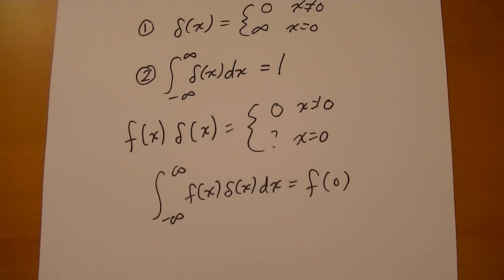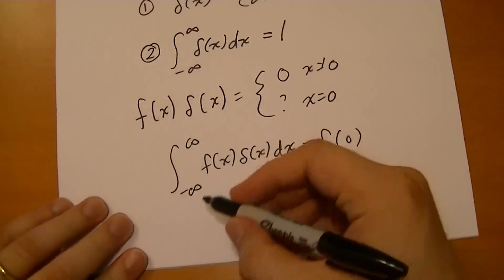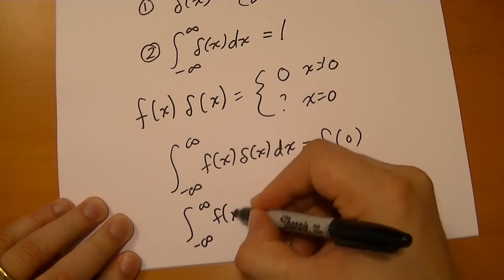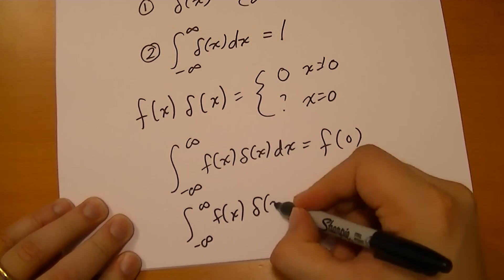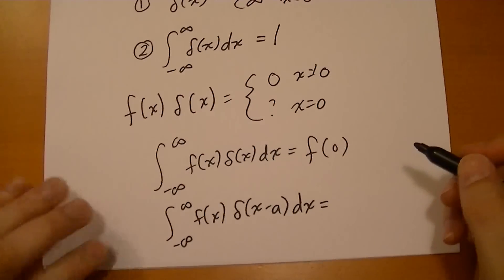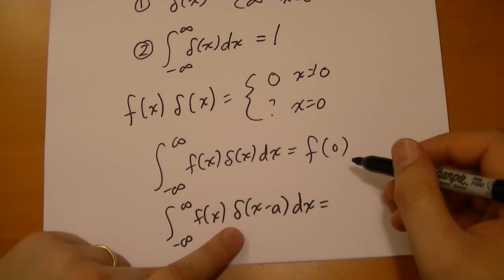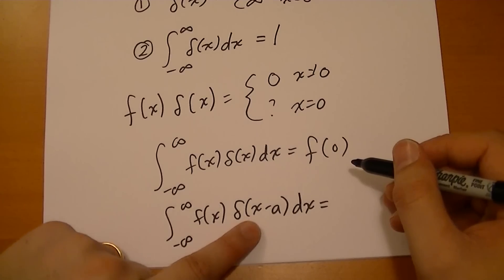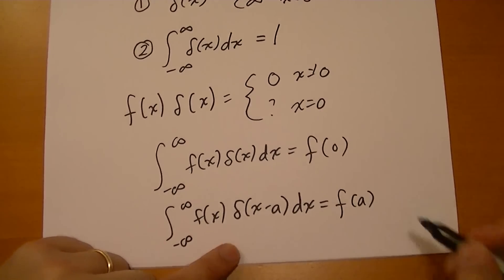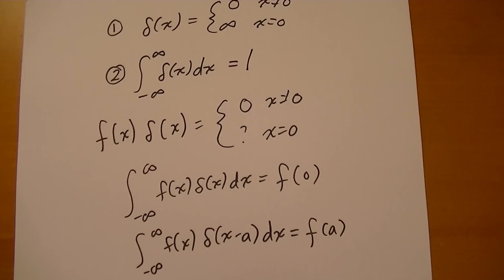And one interesting thing is often you'll see the Dirac delta function in this form where you have the x minus some constant. And for that you just have to think when is the Dirac delta function going to be zero? Well, that's going to be zero when x is equal to a, and so it pulls out f of a for you. So that's what you're going to see it more commonly rather than going zero, but some original point.